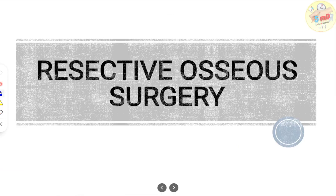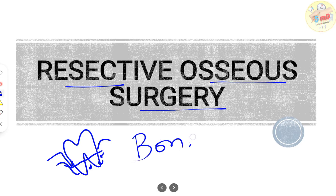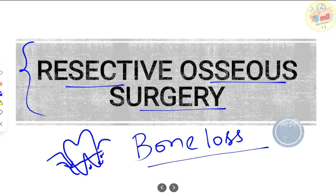In this video we will see about resective osseous surgery. For beginners: periodontitis is a disease characterized in simple clinical terms by deep pockets and bone loss. Clinically you could diagnose it with pockets, and radiographically you could see it with bone loss. Bone loss can be either horizontal or vertical. To know more about bone loss, refer to our video on types of bone loss and bone defects.